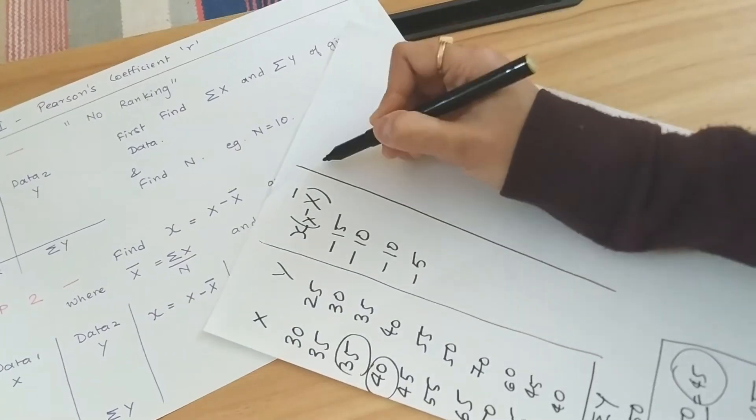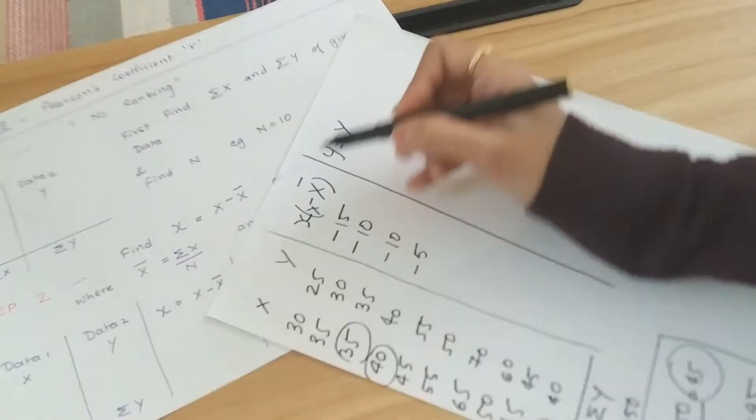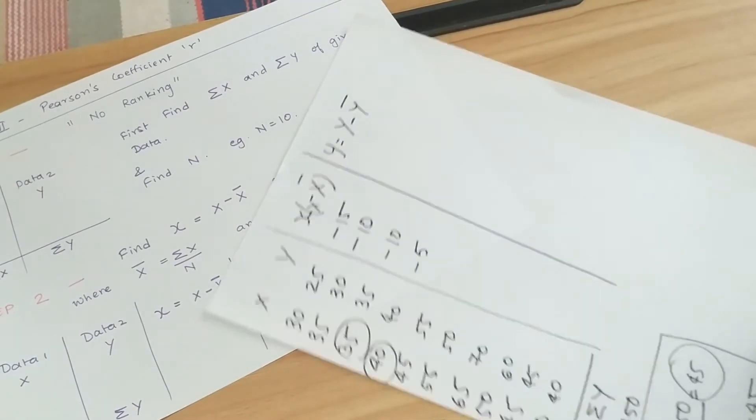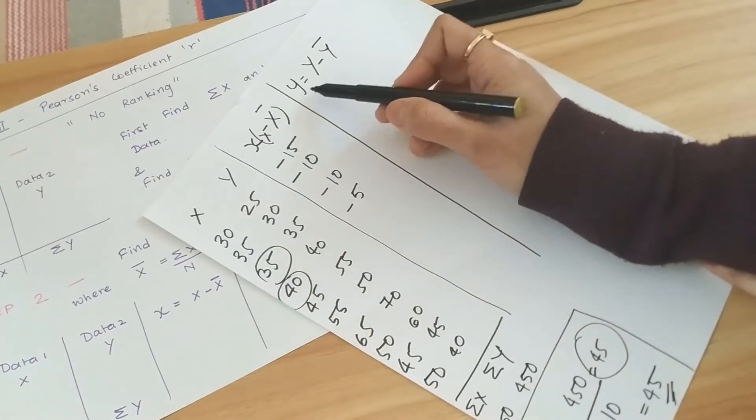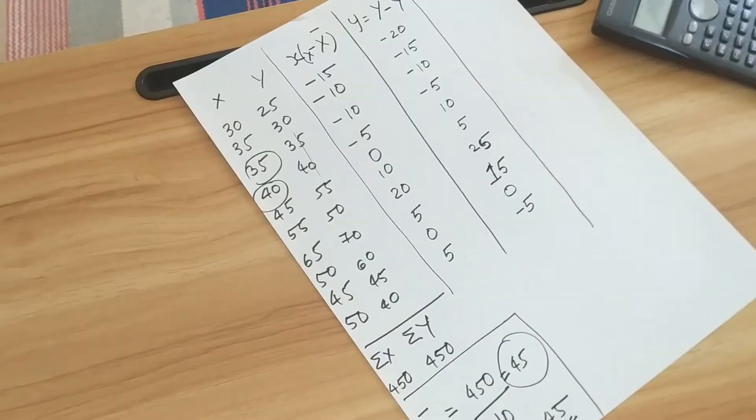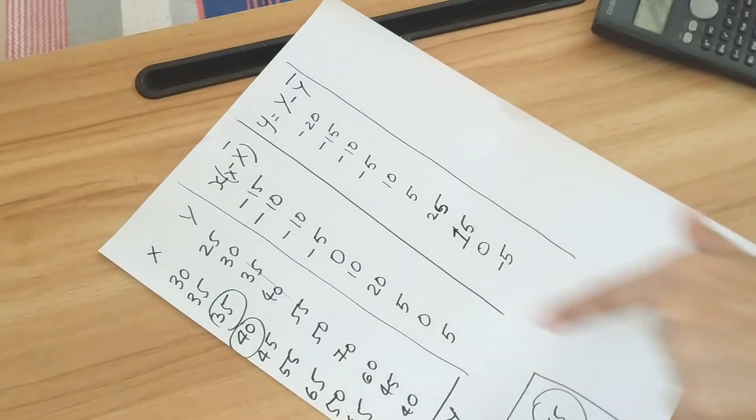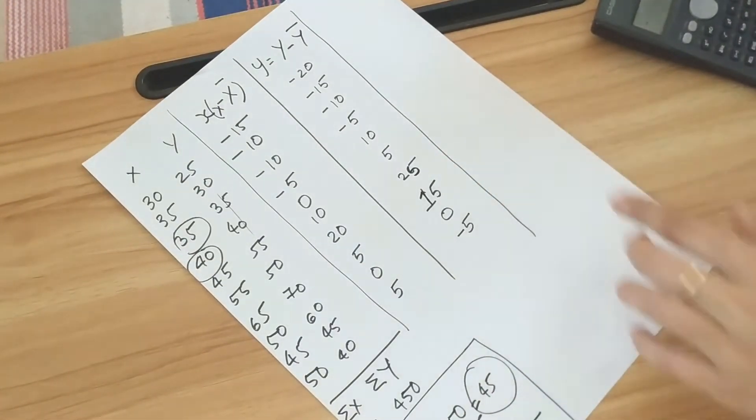Similarly we find out small y which is equal to capital Y minus the y bar which we just got the value. This is the y bar. So again each value of y minus 45. So we have found out both small x and small y values by subtracting each element by the x bar and y bar.